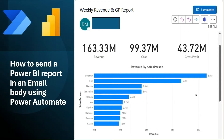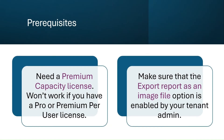Welcome everyone to this tutorial on how to send a Power BI report in an email using Power Automate. Before we proceed, we need specific prerequisites met: we need to have a premium capacity license. If you have a pro license or premium per user license, it might not work. Also, you need to make sure your admin enables the 'Export report as an image file' option in the admin center, otherwise it will start throwing errors.